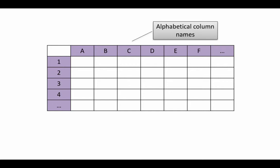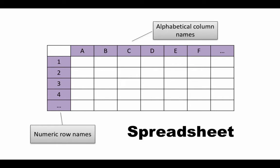A spreadsheet can have numerous columns, and most of the time we will not go anywhere near the limits that a spreadsheet program allows. The rows are numbered with numeric row numbers, and that's all there is to a spreadsheet program.